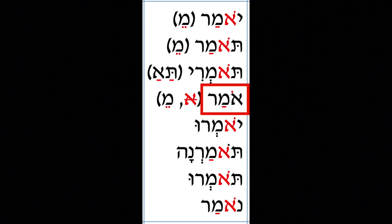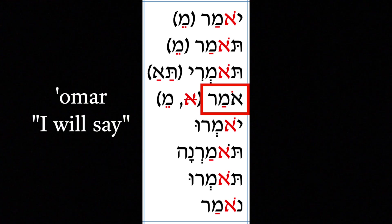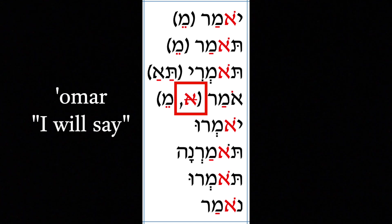And if we look on the fourth line, we see a very difficult verb — omar — which means 'I will say.' The parentheses tells you why it's so difficult. We see an aleph that is scratched out. What that means is that the aleph of the root, Amar, has actually disappeared.